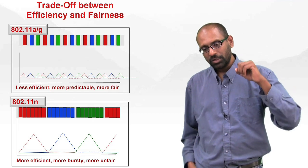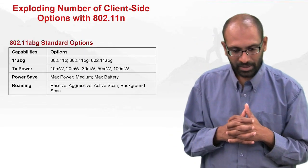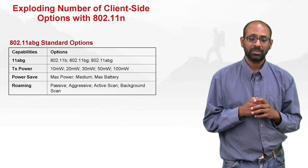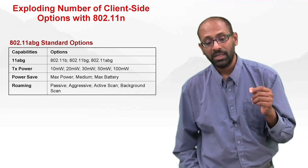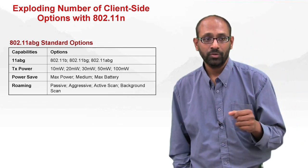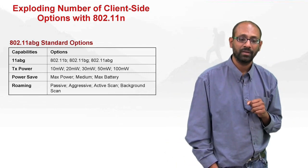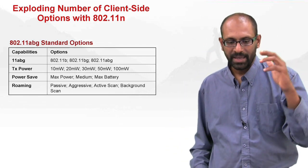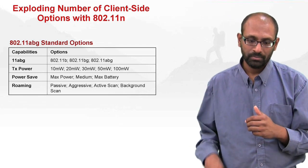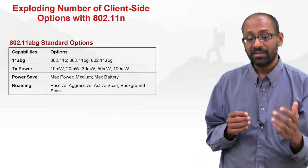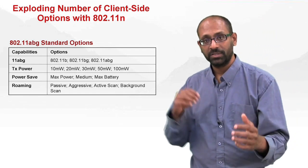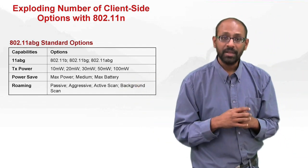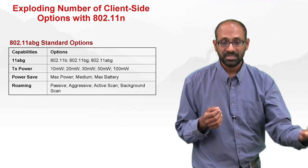So now let's look at what it really takes to build 11n network. The first and the biggest problem is really the exploding number of client options. If you thought you had a lot of things to tune with ABG, wait until you see what you get with 11n. All you have to do, in fact, is look at the wireless options in Windows Zero Config. With ABG you had essentially four things, right? So you had the basic capabilities, B, A, G, ABG, etc. You had the transmit power, you could tune transmit power. You could tune power save behavior. It could be, you know, max power save versus medium versus max battery life or max for capacity or max for battery life. And then you could tune roaming, right? You could make roaming very sticky or you could make it very frisky.